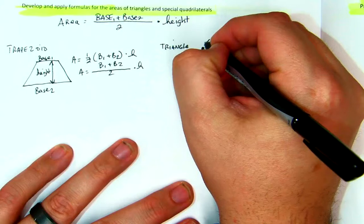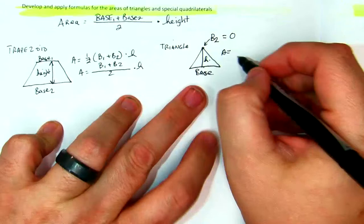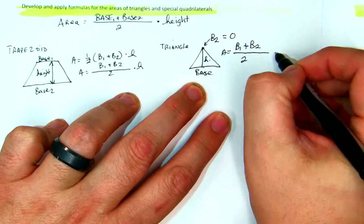Now, since it's a point, does it have a length? No, the length is 0. So the area, if we use this equation, would be base 1 plus base 2 divided by 2 times the height.